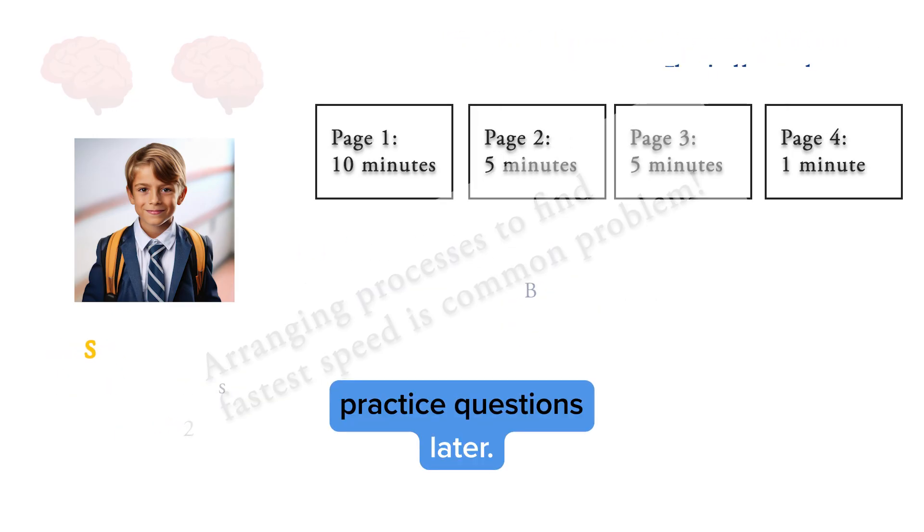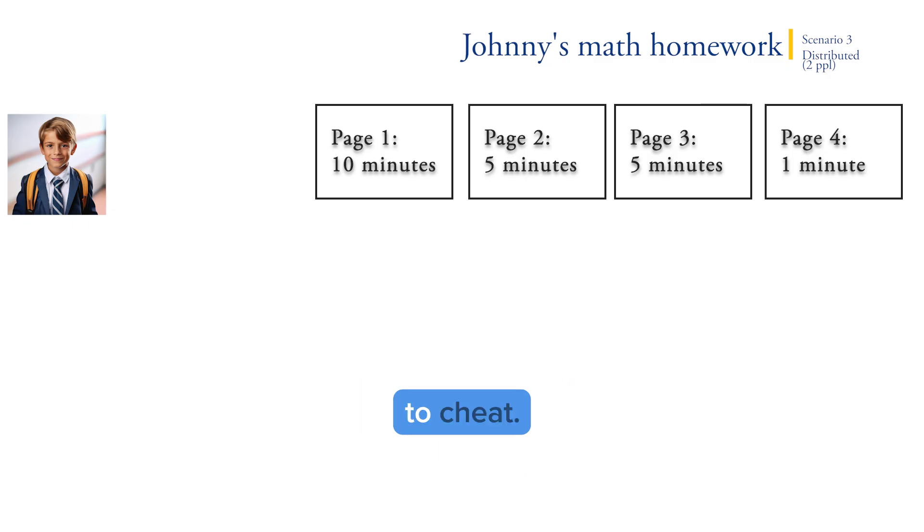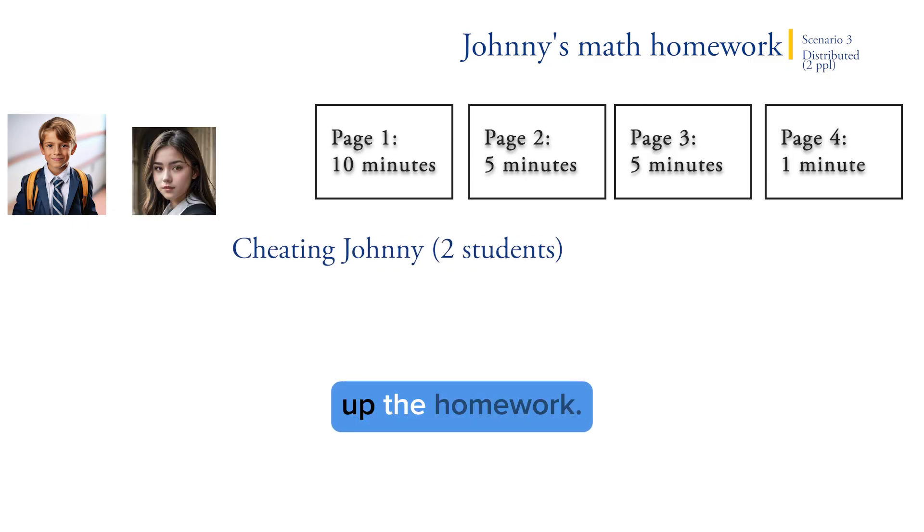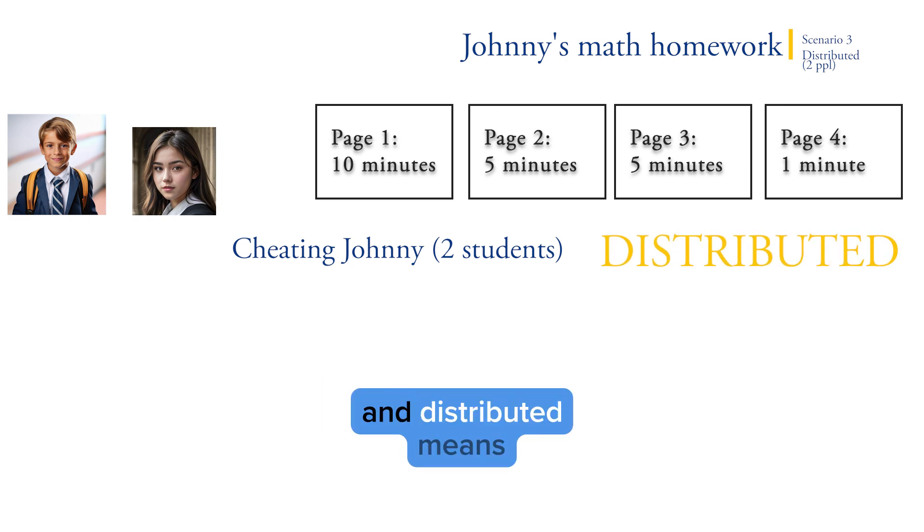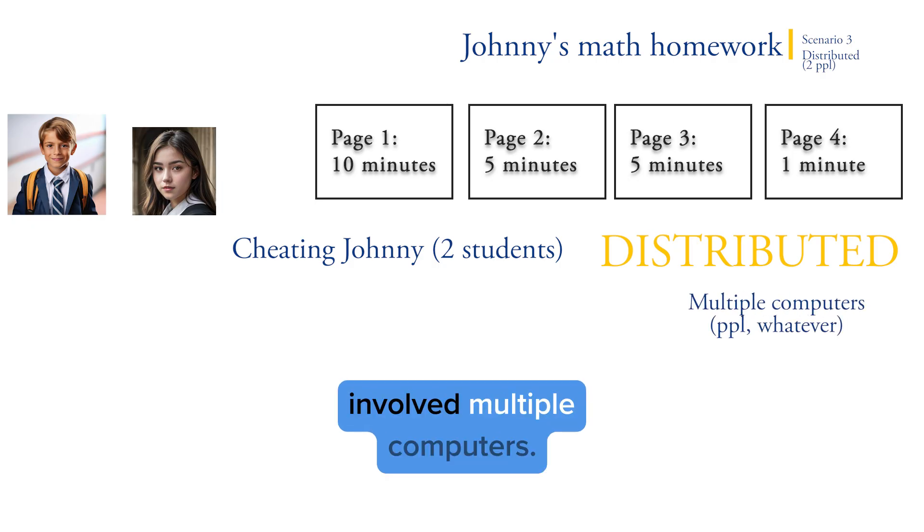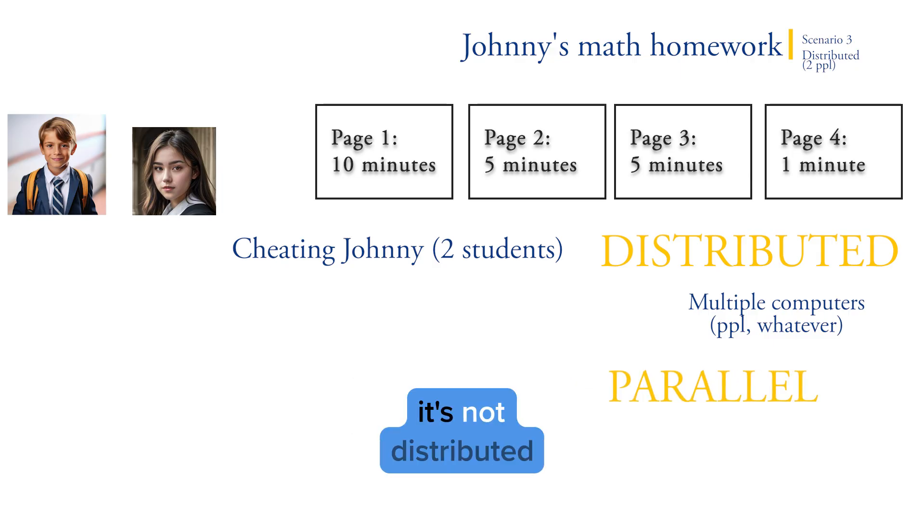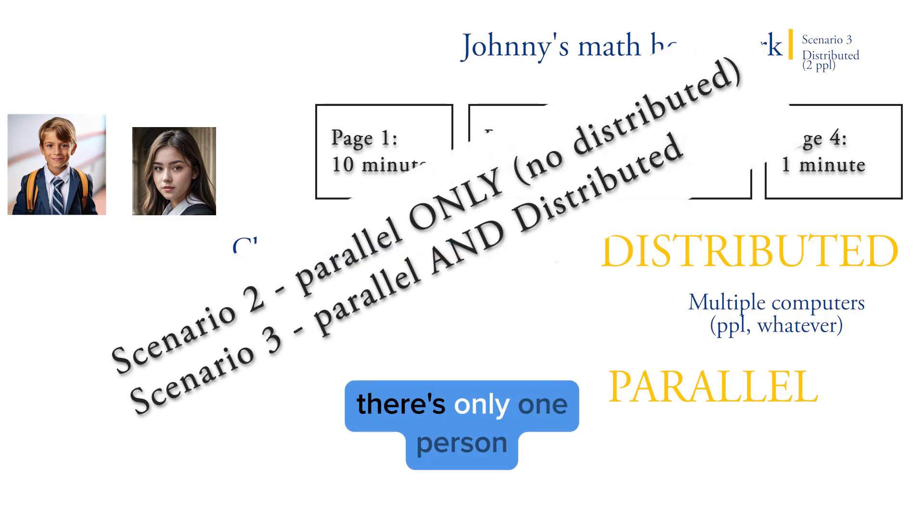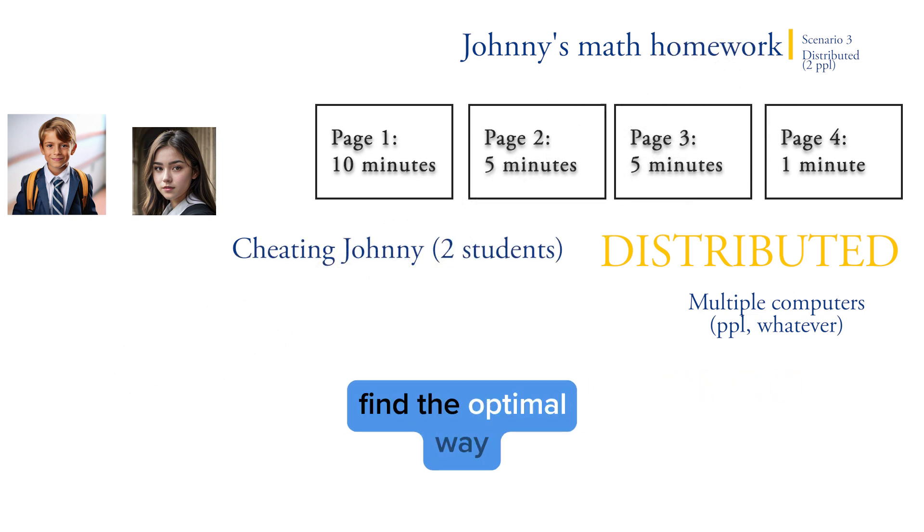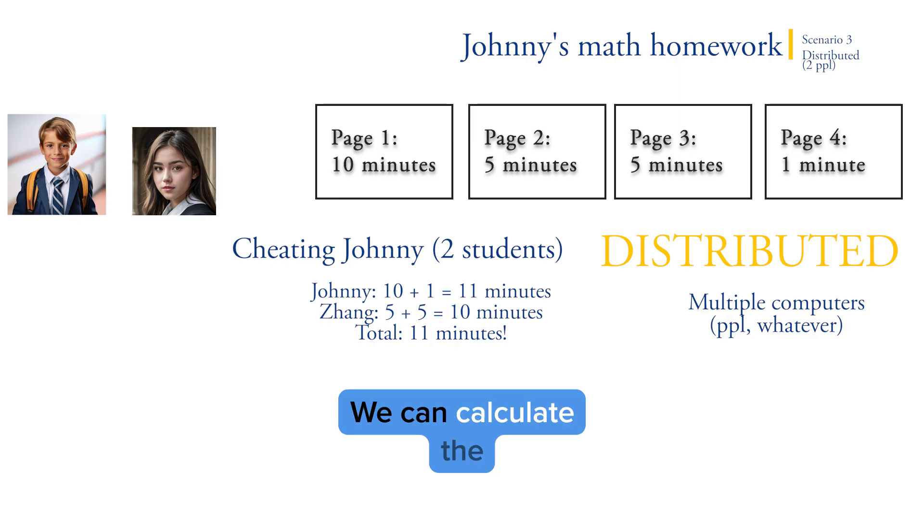Scenario three. So now Johnny decides to cheat. Johnny gets his friend John and they split up the homework. AP has an important term for when you get multiple computers involved, which is called distributed. Distributed means there's multiple computers or, in this case, people involved. If you ask people who work in the field, they would also call this parallel because you split up the task, but it's not distributed until you have multiple computers. So scenario two was only parallel, not distributed, because there's only one person or computer. This scenario, scenario three, is distributed, and I think regular scientists would also call it parallel. Once again, we can find the optimal way to distribute the work among computers, or in this case people, and we can calculate the optimal speed up. And these are types of problems you see all the time on the AP exam.